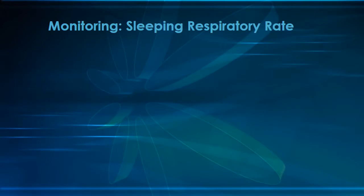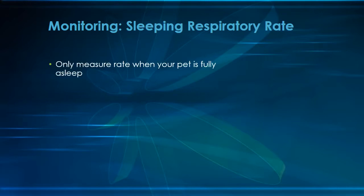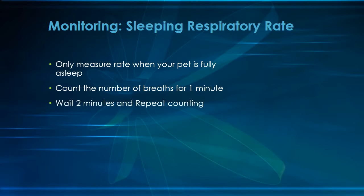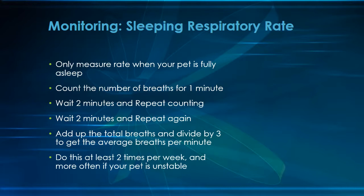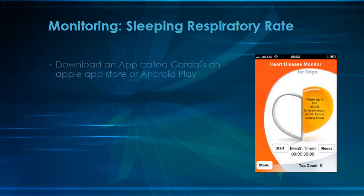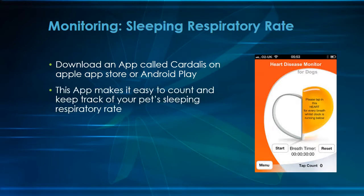Measuring sleeping respiratory rate is pretty easy. Your pet must be sound asleep for this to be accurate — the time of day is not important. Get an average of three rates: count the number of breaths in a minute, skip a few minutes and repeat, then repeat once more. Total the three values and divide by three to get the average breaths per minute. You should do this at least two times per week. There is a free app called Cardalis, available in the Apple App Store and Google Play Store, which makes tracking sleeping respiratory rates simple — I highly recommend you download and use it.